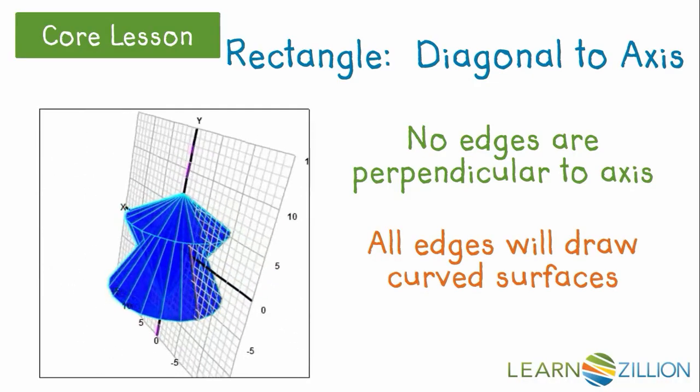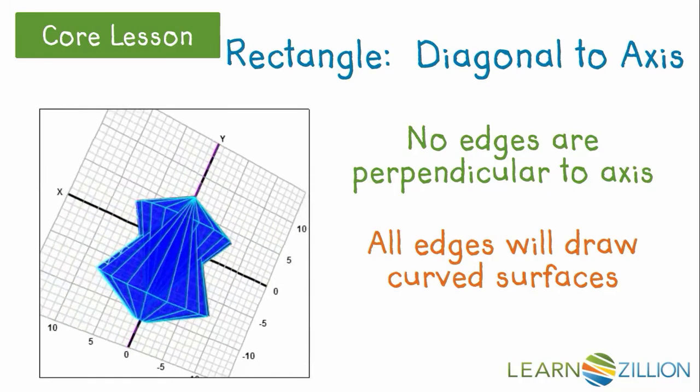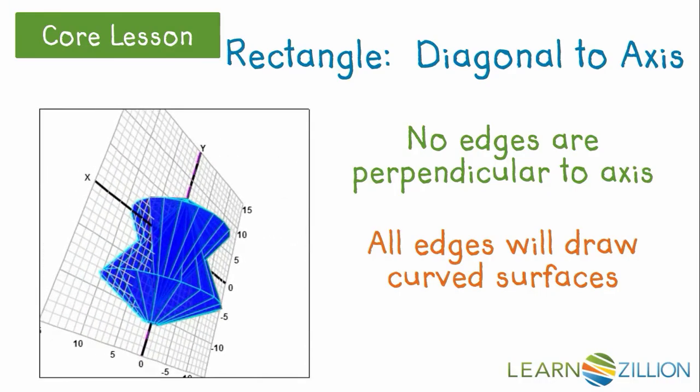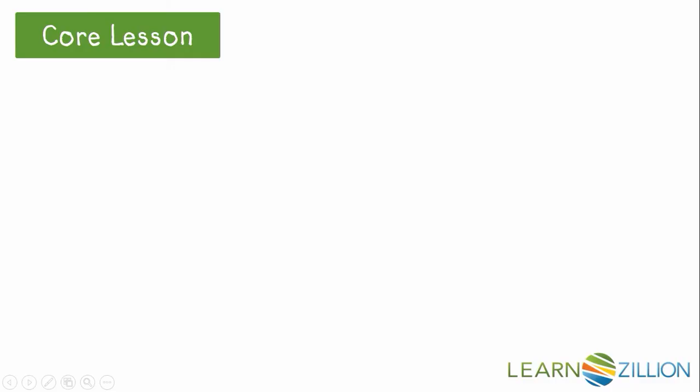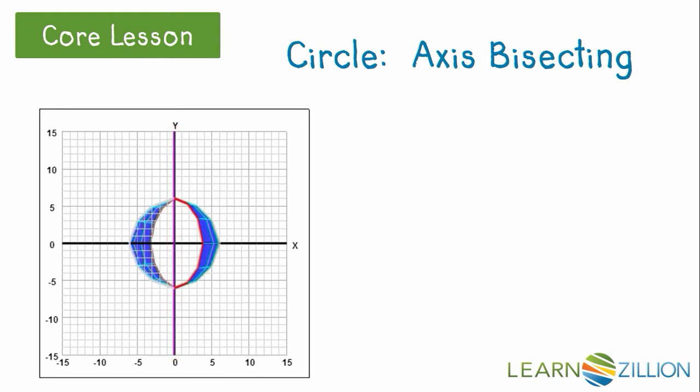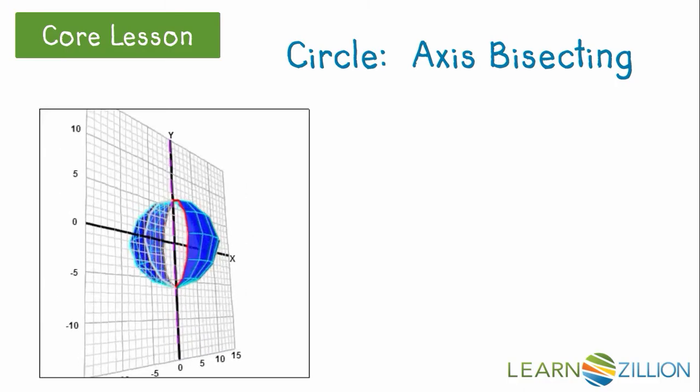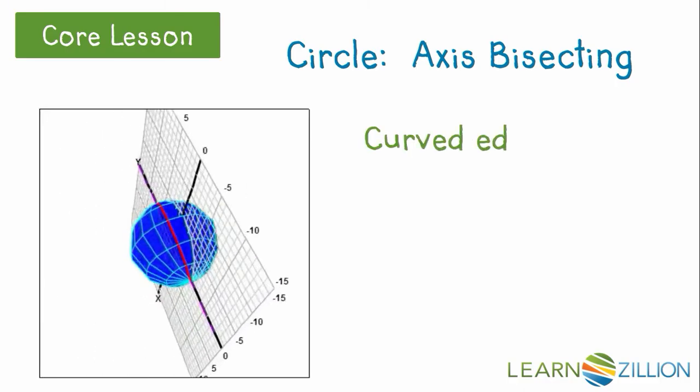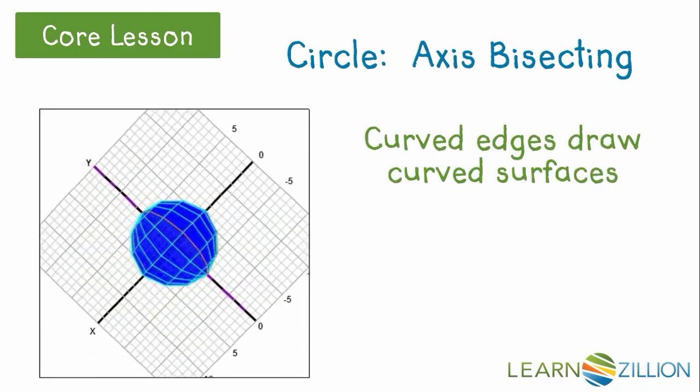So, what about rotating a circle? Now, clearly this is not an actual circle, but stretch your imagination with me. Let's think about how this would rotate. If this were a circle, there would only be a curved edge, right? In fact, rotating this will create curved surfaces, and it will be a sphere.